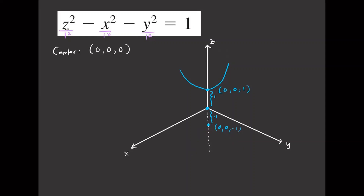Now we add the traces in the XY plane — those are ellipses at each sheet. We can also draw the hyperbola in the XZ plane, which appears in the background. So that's your hyperboloid of two sheets for this first example.